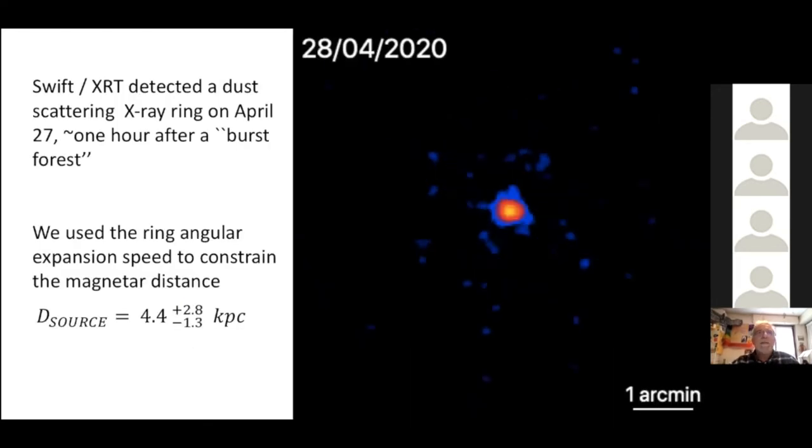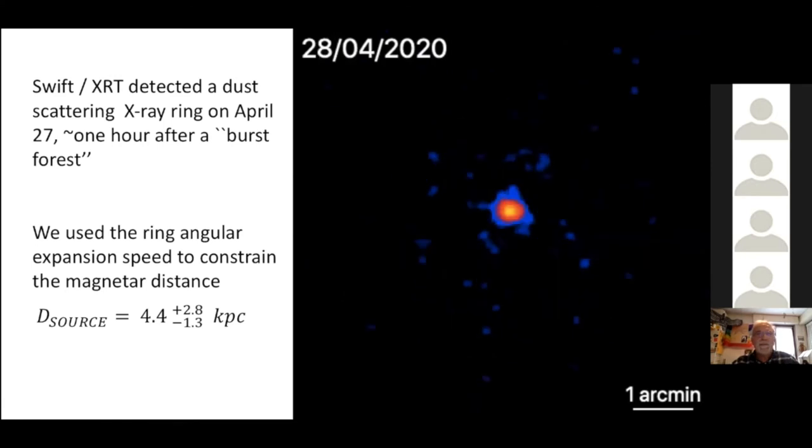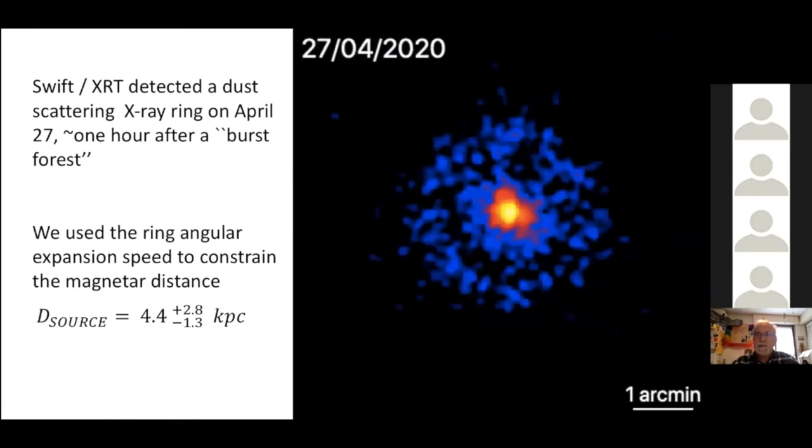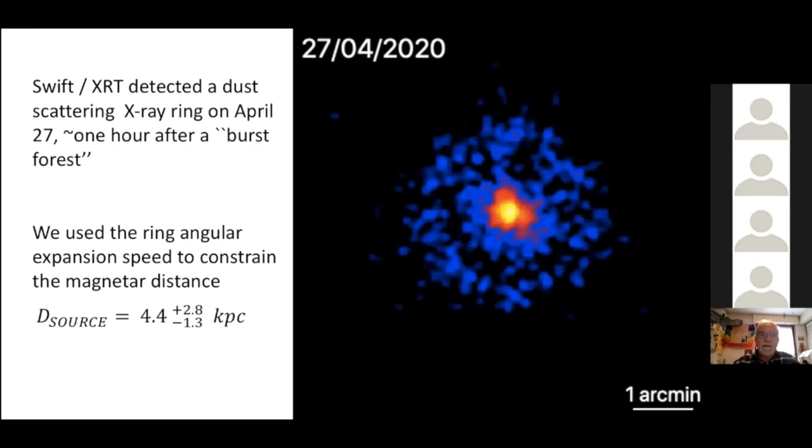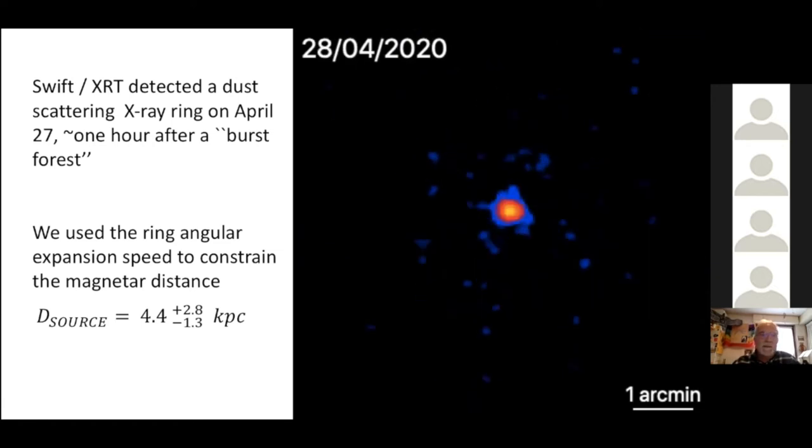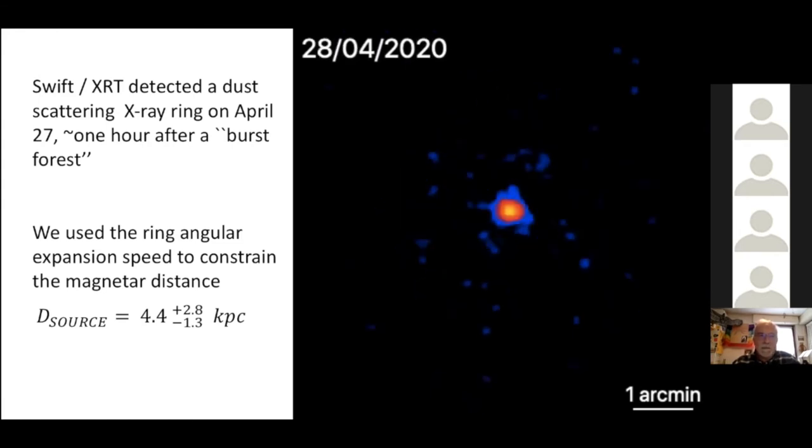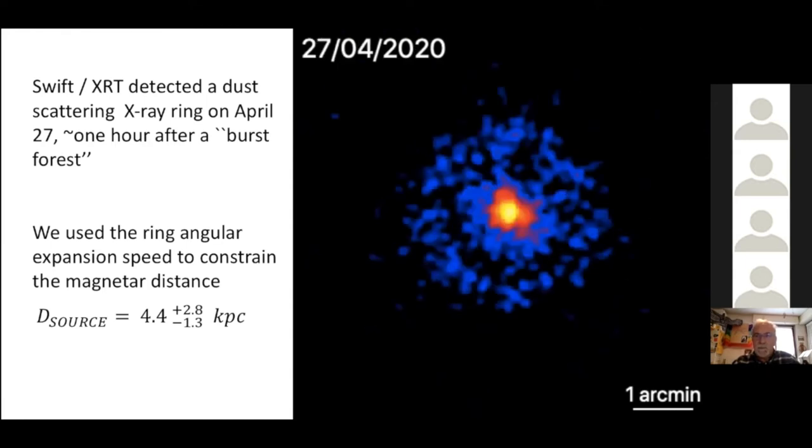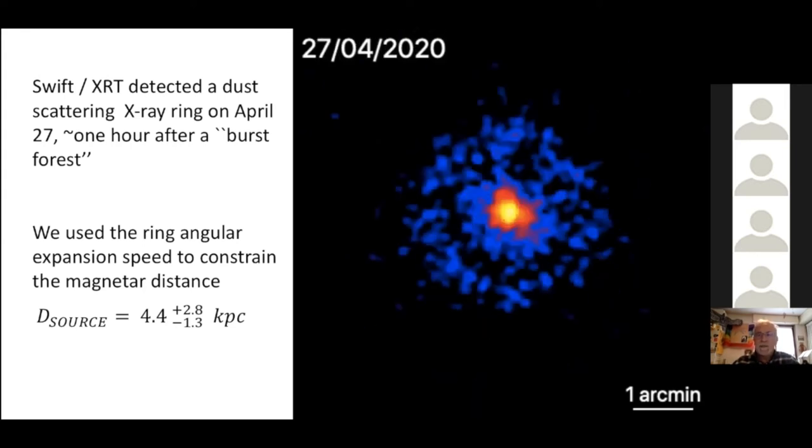The majority of the bursts was emitted on April 27. The following day, the Swift X-ray Telescope detected this dust scattering ring. And we could use the apparent angular expansion of this feature to derive a distance to the magnetar. It is a distance that has still quite large uncertainty. But I think it is important because it is, for this particular source, the first distance estimate that does not depend on assuming a real association with a supernova remnant. But I am not talking about this today.